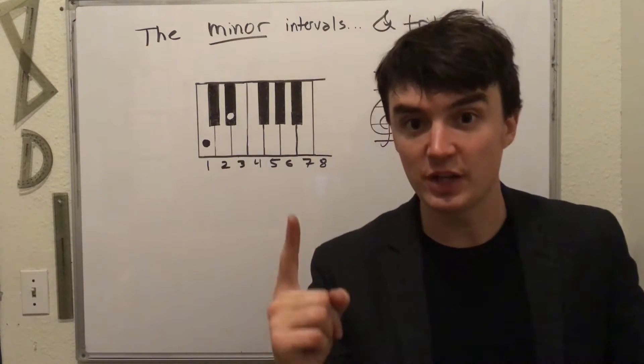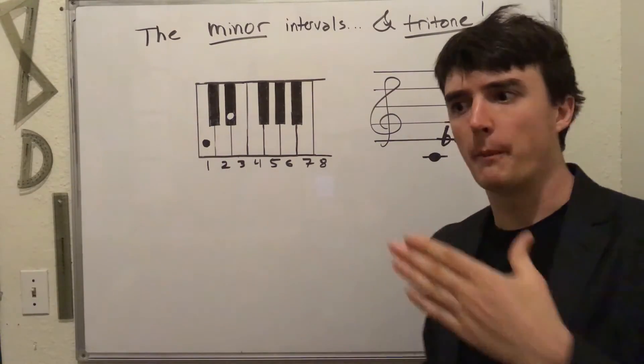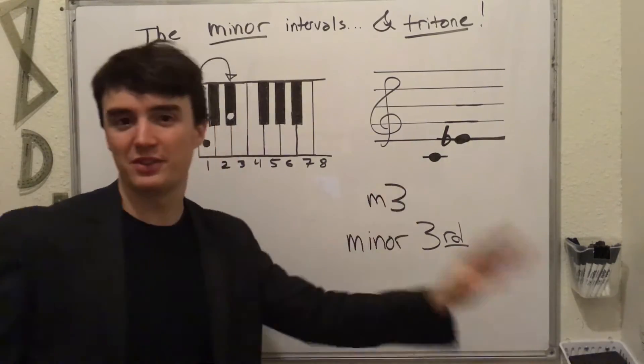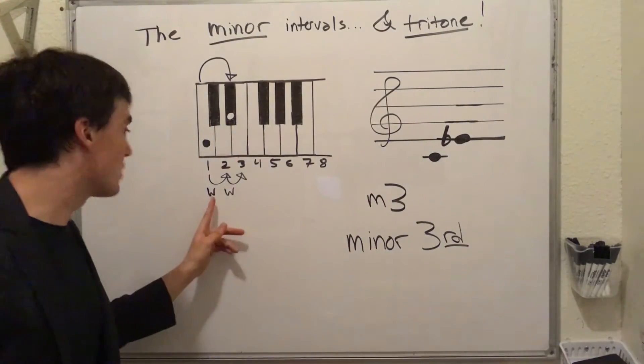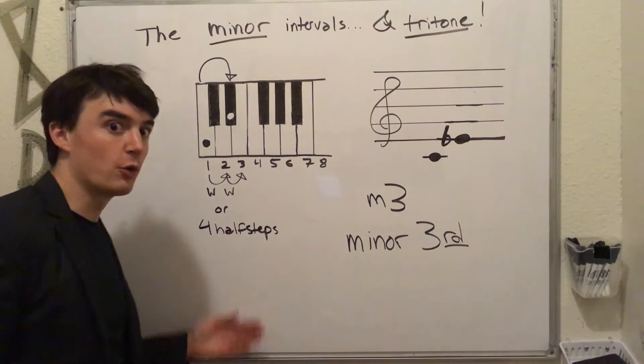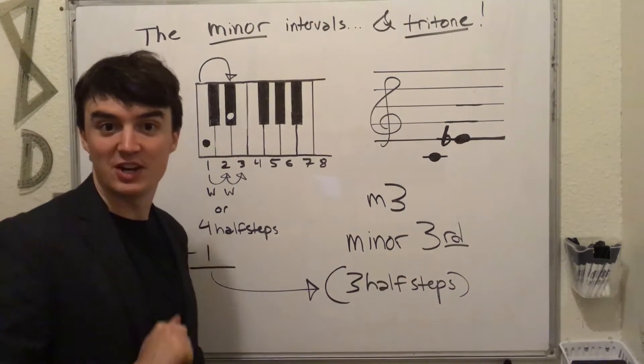So let's say we're starting on one and landing on a flat third. Third flat major makes it minor. That means lowercase m minor third. And since a major third is a whole step and a whole step or four half steps, with the flat it becomes three half steps from the tonic.